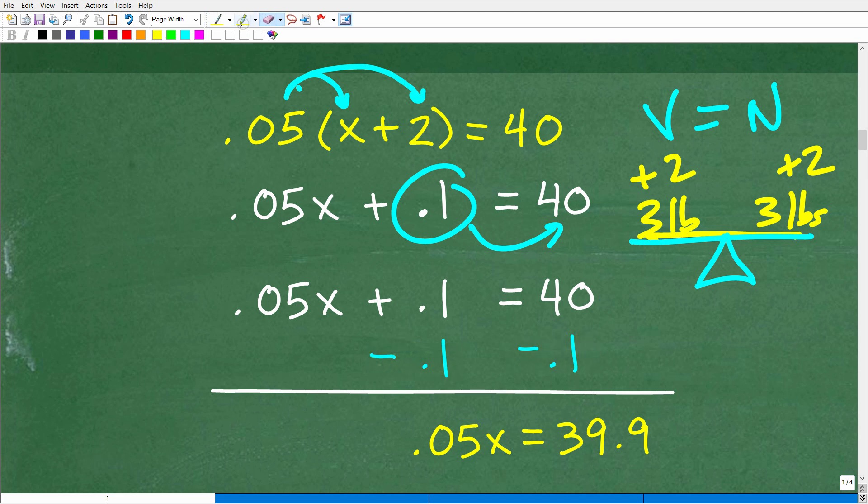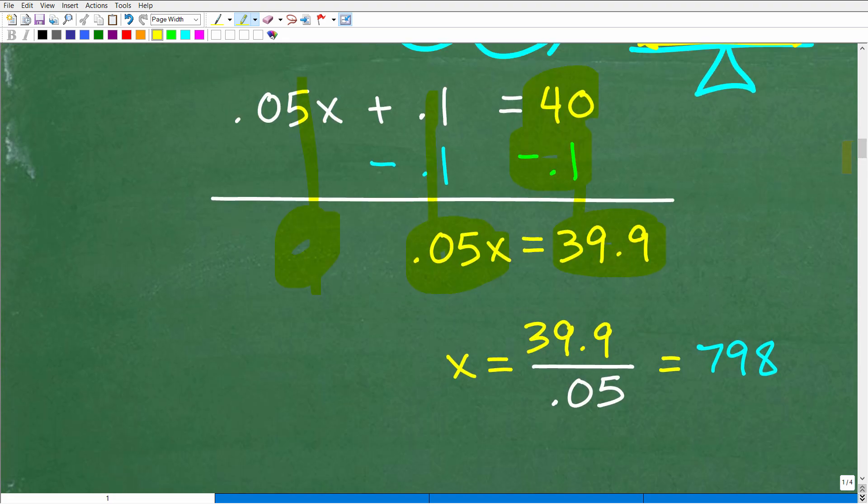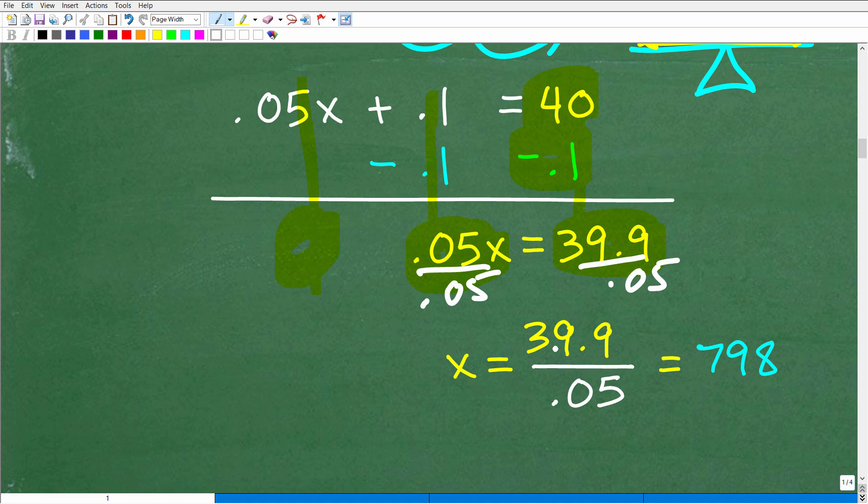So I'm going to subtract this 0.1 from both sides of the equation. And then we'll add down in a column manner. So we've got 0.05x plus nothing is 0.05x. Positive 0.1 minus 0.1 is 0. We don't need to write that. And then 40 minus 0.1 is 39.9. So how do we solve for x? Easy. All we need to do is divide both sides by 0.05. And 39.9 divided by 0.05 is 798. So that is what x is equal to.